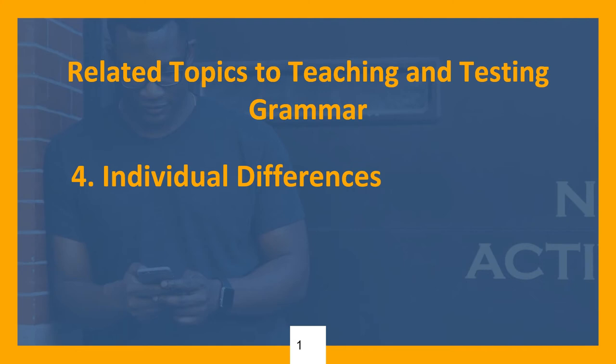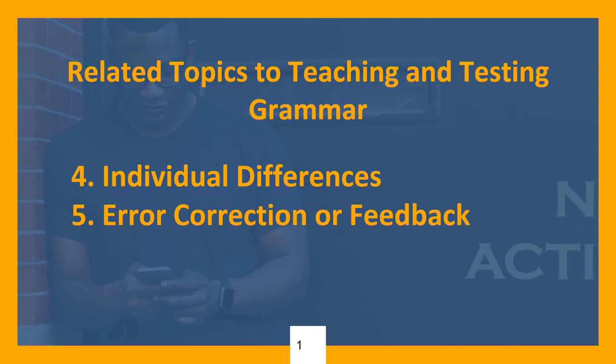Next, we have error correction or feedback. Error correction and feedback for learners can be done explicitly or implicitly. The latter takes place through such means as clarification requests, confirmation checks, and recasts. When there is a second language and first language contrast, the learner may need explicit negative feedback. Remember to always give learners feedback on their non-target-like performance in an affectively supportive way.